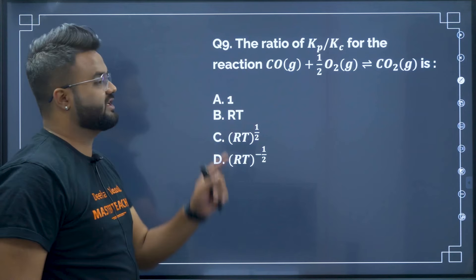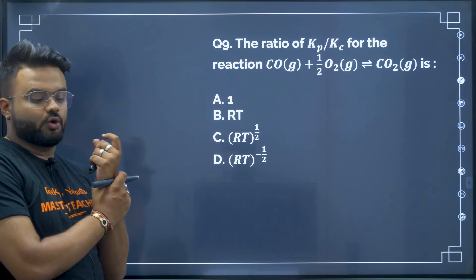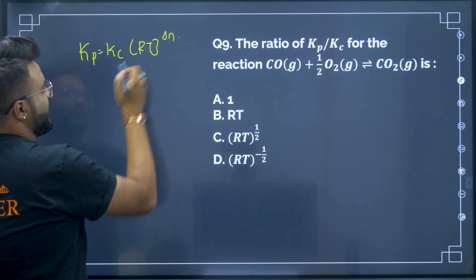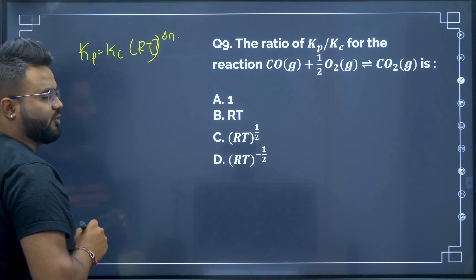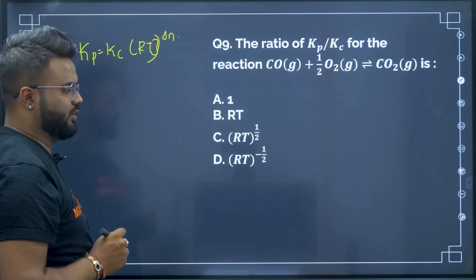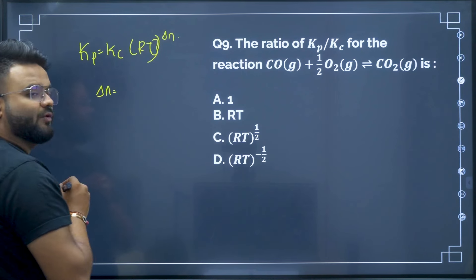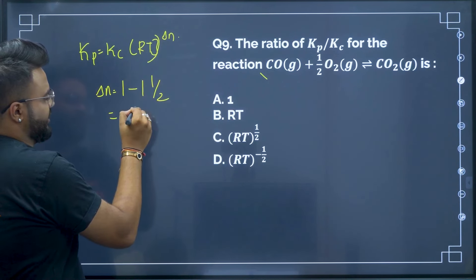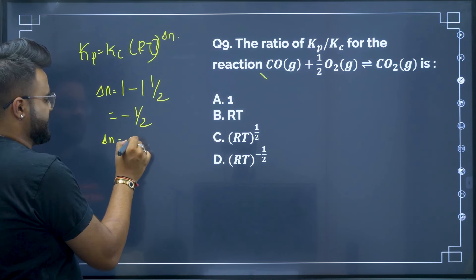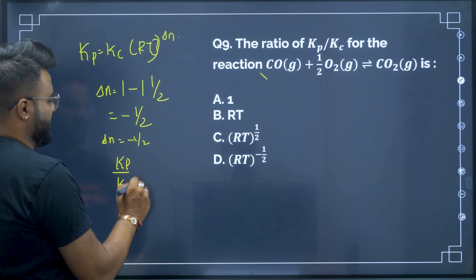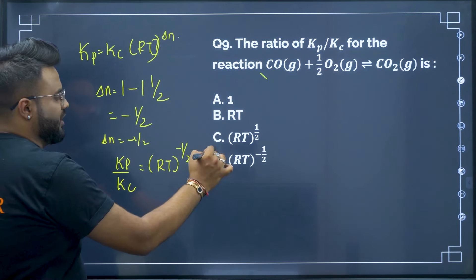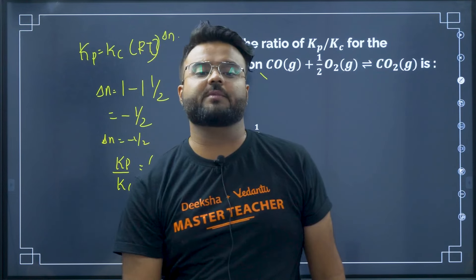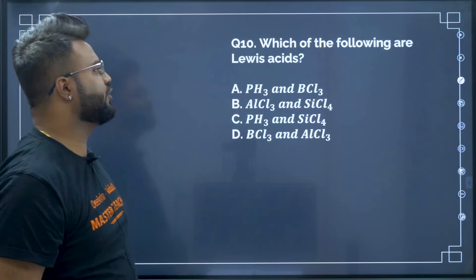Question 9: The ratio of Kp/Kc for CO + ½O₂ → CO₂. We know Kp = Kc × (RT)^Δn. Here Δn = moles of products − moles of reactants = 1 − (1 + ½) = −½. Therefore Kp/Kc = (RT)^(−1/2). Therefore option D is your correct answer.